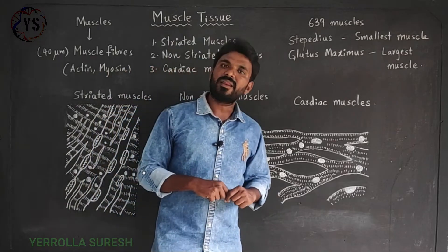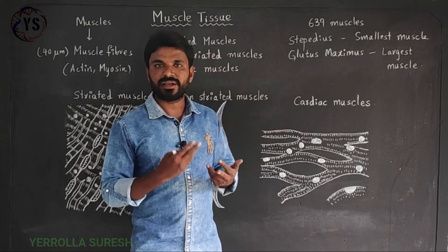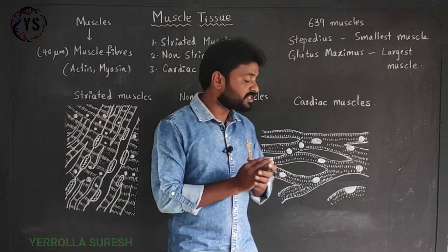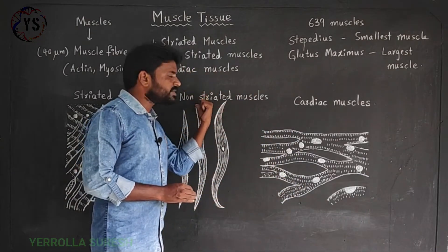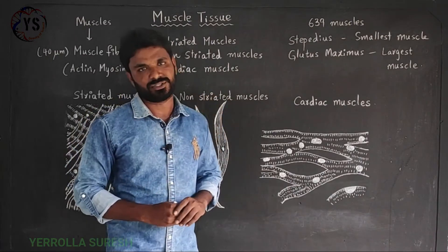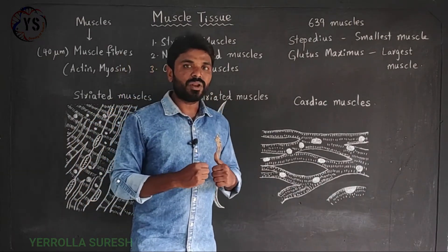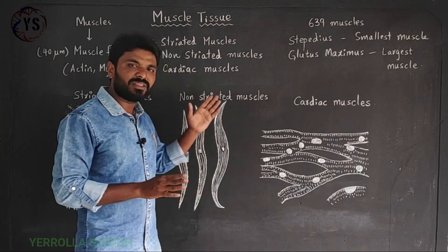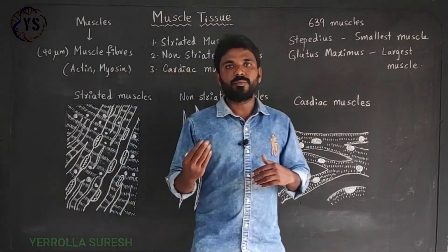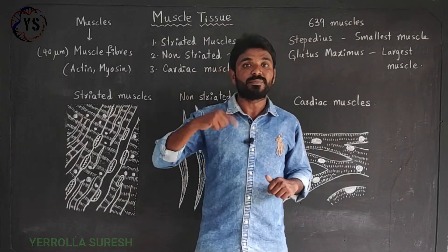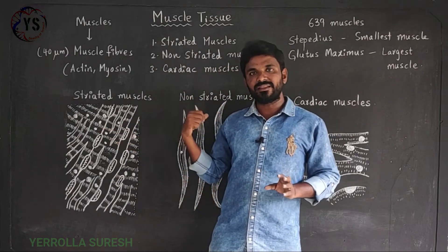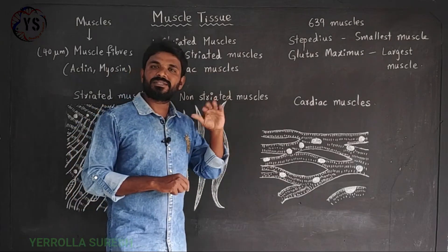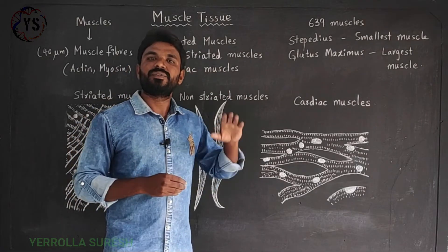Non-striated muscles are present inside the internal body parts — the stomach, esophagus, small intestine, large intestine, kidneys, and lungs are all made of non-striated muscles. So non-striated muscles are responsible for the movement of all internal body parts. The movement of internal body parts is not controlled by us, unlike the movement of hands and legs. Therefore non-striated muscles are also called involuntary muscles.